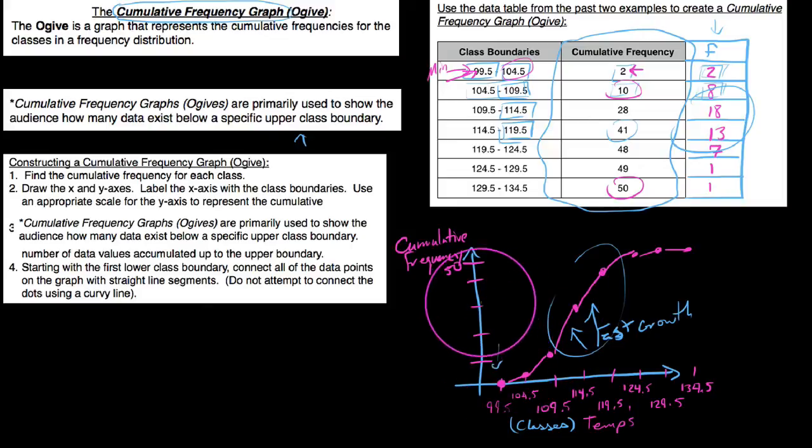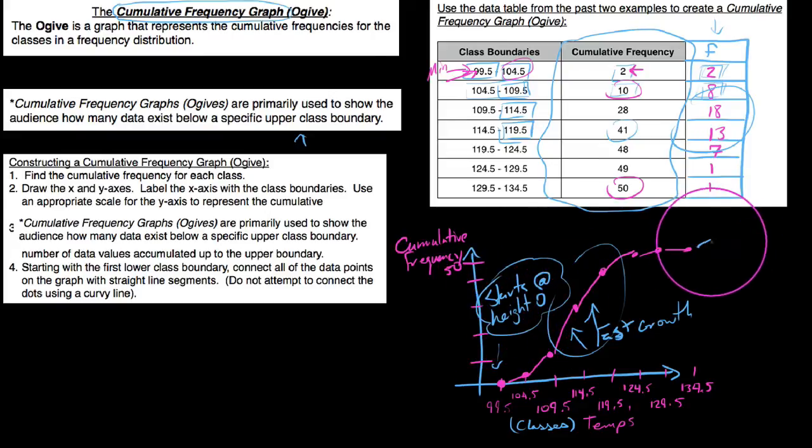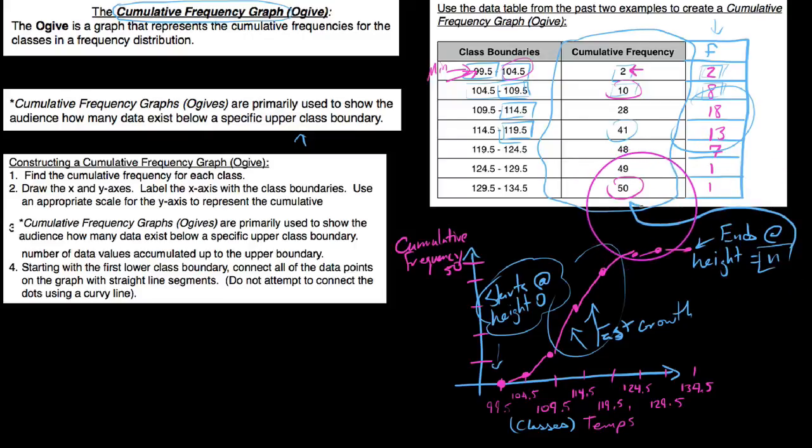Also if we say it starts at height zero, that's one thing we want to know, and it ends at height equal to n. Now remember n, which stands for number, represents the total number of data in our data set. So this is how you make a cumulative frequency graph or an ogive, that's what this graph is called, an ogive.